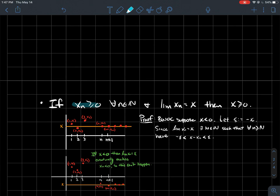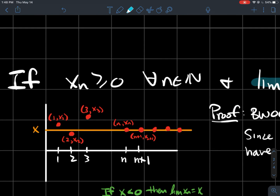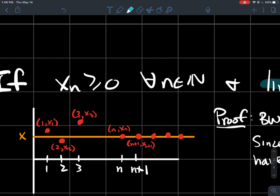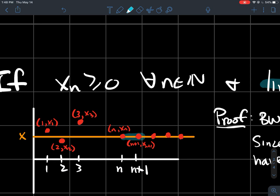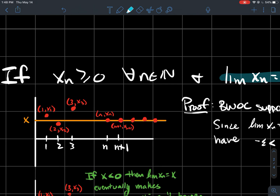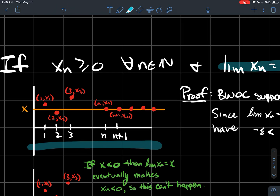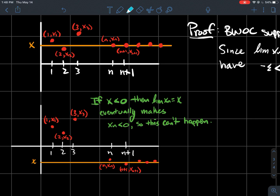If you have a sequence that's always non-negative and it converges to some number x, then the limit has to be non-negative also. Pictorially: if the red points never dip below the x-axis and they level off at some point, where they level off has to be above the x-axis too. If the limit were negative, eventually all the points in the sequence would need to be negative, which contradicts the assumption that all points are non-negative.